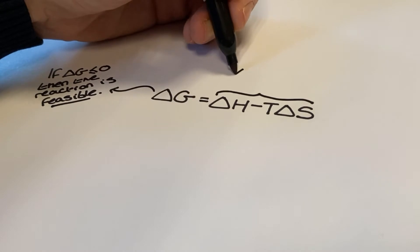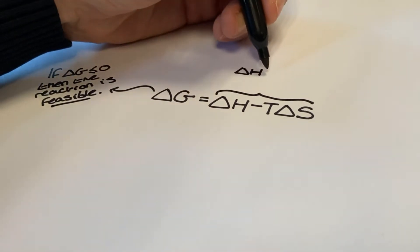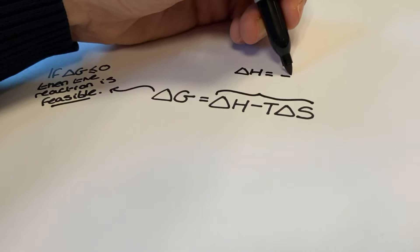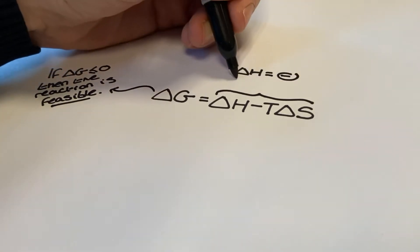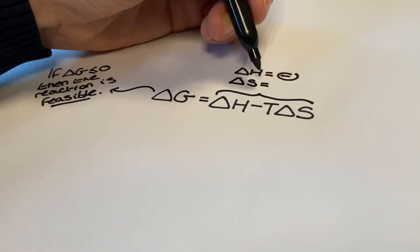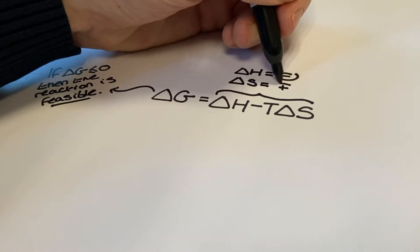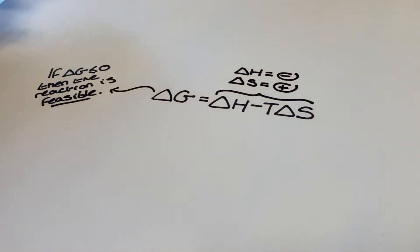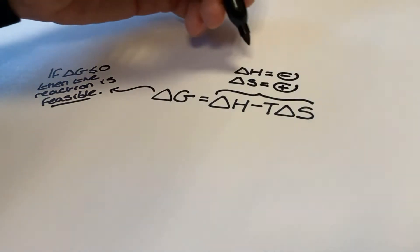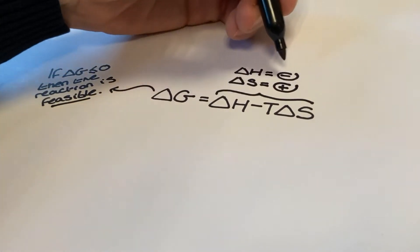The first combination of delta H and delta S that we are going to consider is an exothermic enthalpy change — that's a negative value for delta H — and a positive entropy change — that's a positive value for delta S. Also don't forget that for all of these combinations, temperature is in Kelvin, so we won't see any negative values of T.